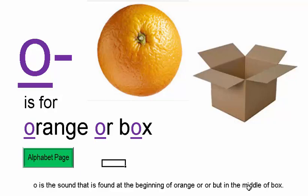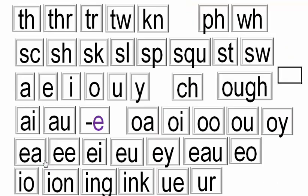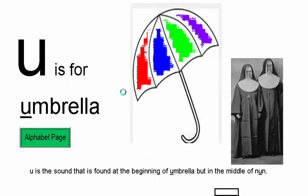O is also found in the middle of BOX. U — U is for UMBRELLA. Here's an umbrella. But also in the middle of NONE. U is the sound found at the beginning of UMBRELLA, but also in the middle of NONE.